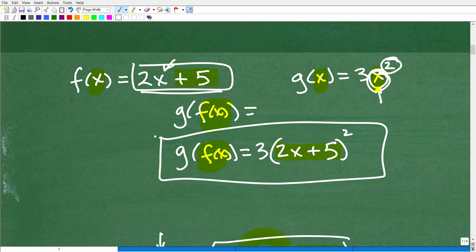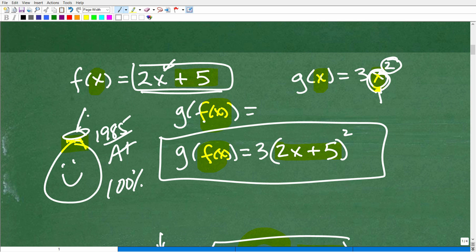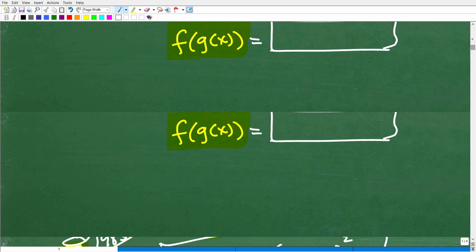But anyways, if you got this down, you understand all this, well, let me go ahead and give you a nice little 1985 flat top haircut, A plus 100%. That was a pretty cool haircut back in the day. I don't see anyone with flat tops anymore. It's kind of a shame. But that was a popular haircut if you grew up in the 80s. It was a cool haircut, just like your ability to do composite functions.